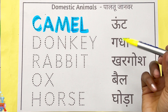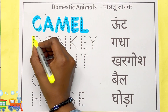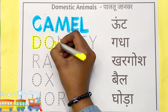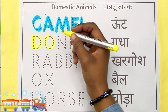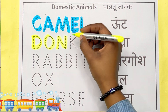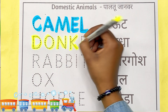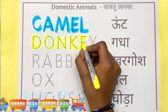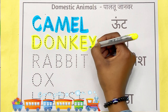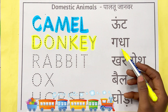Lemon color — donkey. D, O, N, K, E, Y. Donkey means gadha.